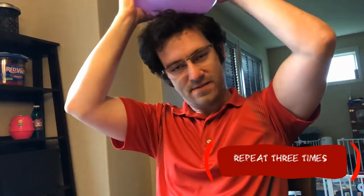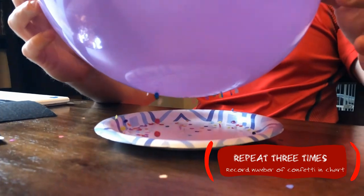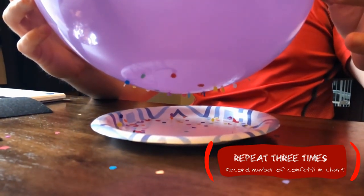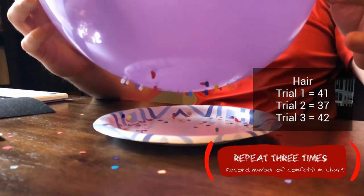Next one was hair. You can probably feel it even as you're charging it up that the hair is going to be very different, and all of a sudden the confetti is flying up like crazy. So hair charges the balloon really well. That's because they have different affinities for those electrons - the hair gives it away pretty well and I think the balloon collects it really well.